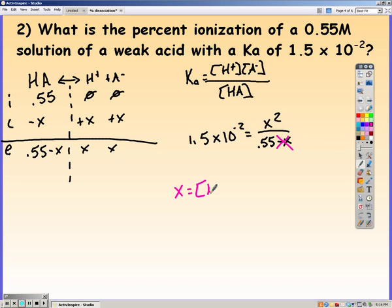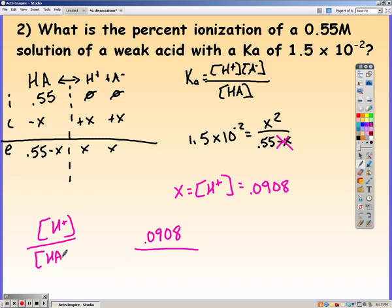Ignore the minus X. Solve for X, which is your hydrogen ion concentration. And in this case, I get 0.0908. So 0.0908 over 0.55, because concentration of H+ over original concentration, times 100. And I get my percent to be 16.51.